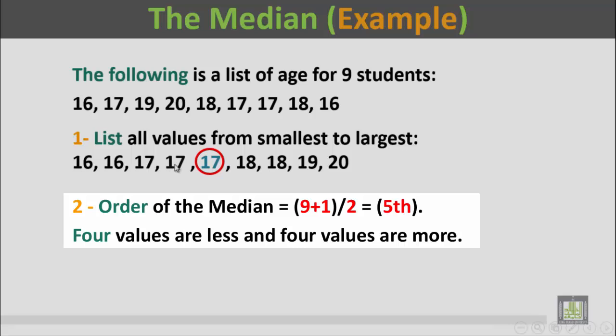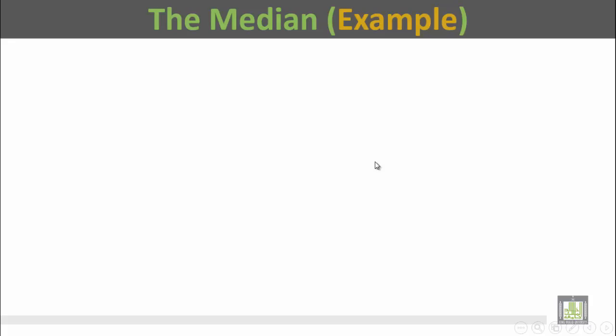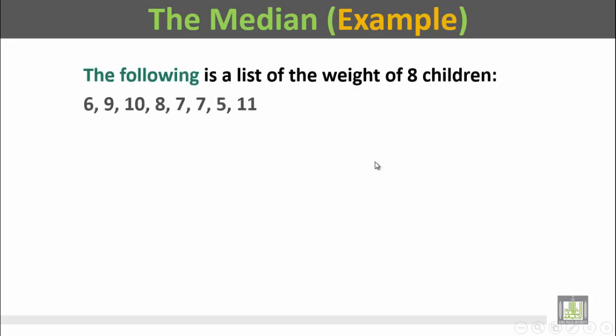So the value of the median is 17, where we have four values smaller than it and four values above it, bigger than it. Another example: the following is a list of the weight of eight children.